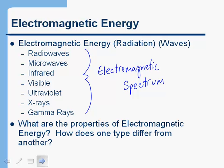We'll talk more about the electromagnetic spectrum in a few minutes. What we'd like to understand in this chapter is: what are the properties of electromagnetic energy, and what is it that differentiates one type from another? For example, when we say that X-rays and visible light are both electromagnetic energy, what makes them different? In some way they're the same, but an X-ray goes right through your skin, while visible light just bounces off your skin.